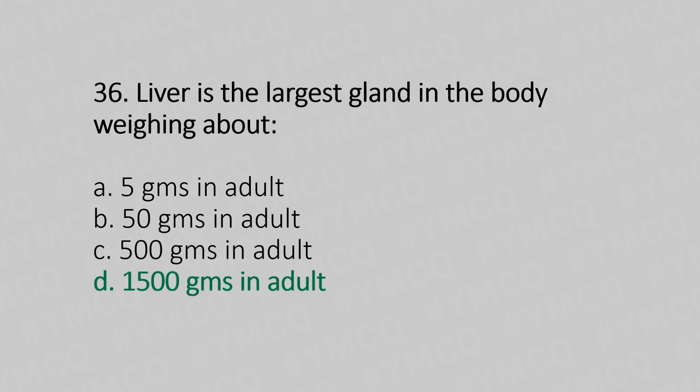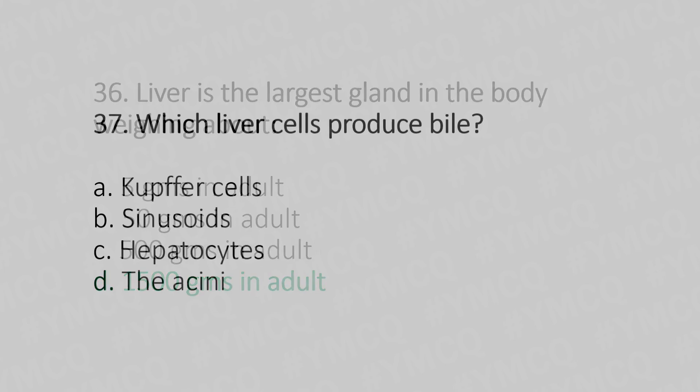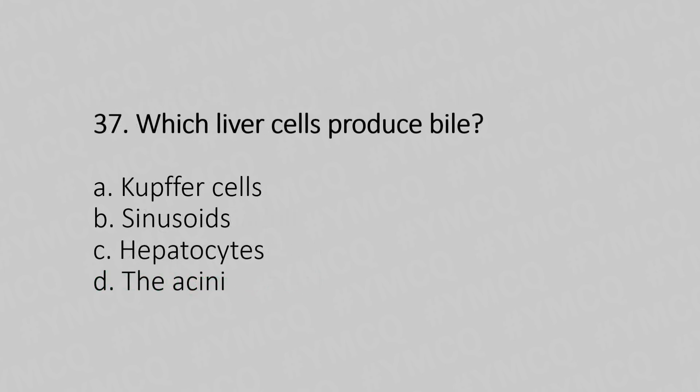Now let's move to question number 37. Which liver cells produce bile? Option A: Kupffer cells. Option B: sinusoids. Option C: hepatocytes. Option D: the angina. And the answer is Option C — hepatocytes.